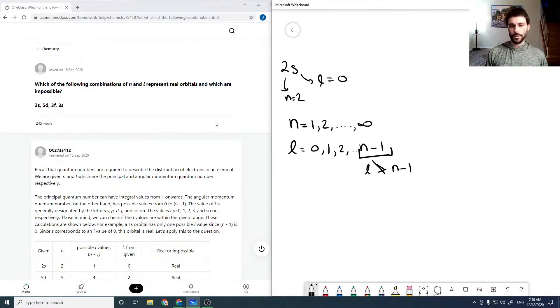And then just to link this back to our spdf notation, l equals 0 is s, 1 is p, 2 is d, 3 is f, and from there it just goes alphabetical. Okay, so now back to the question.